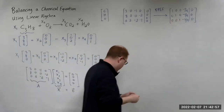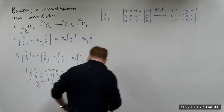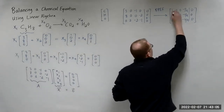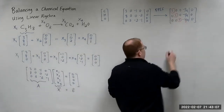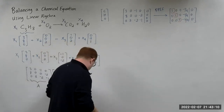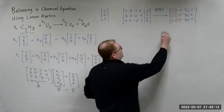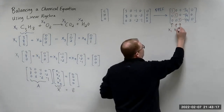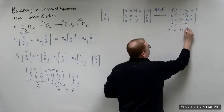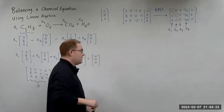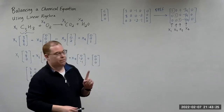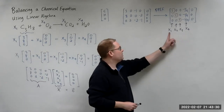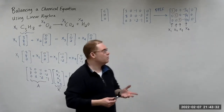Notice that we have three pivots. We have columns for X1, X2, X3, and X4. So we basically have one free variable: X4 is our free variable, and X1, X2, and X3 are the basic variables.